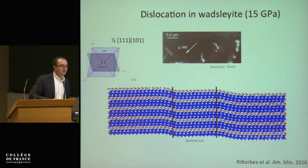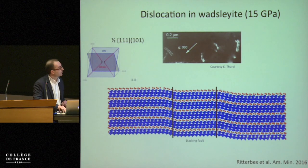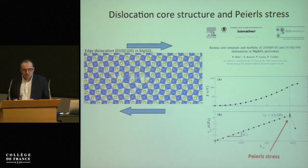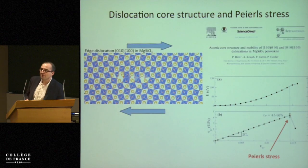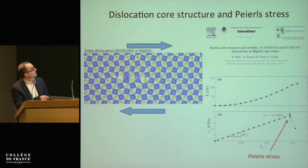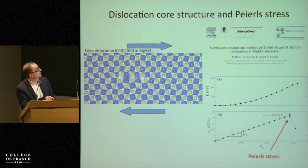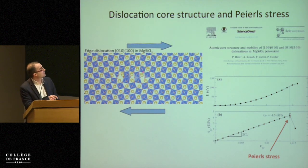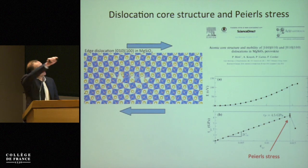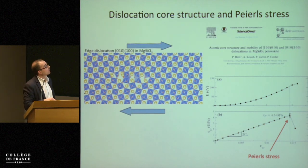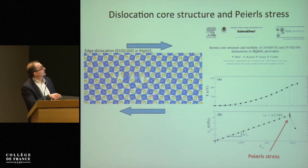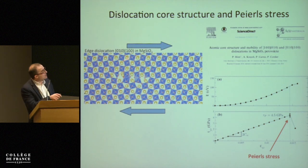Here you have an edge dislocation core — you see the perfect crystal and the dislocation with its line going out from the board. This is a dislocation in bridgemanite.